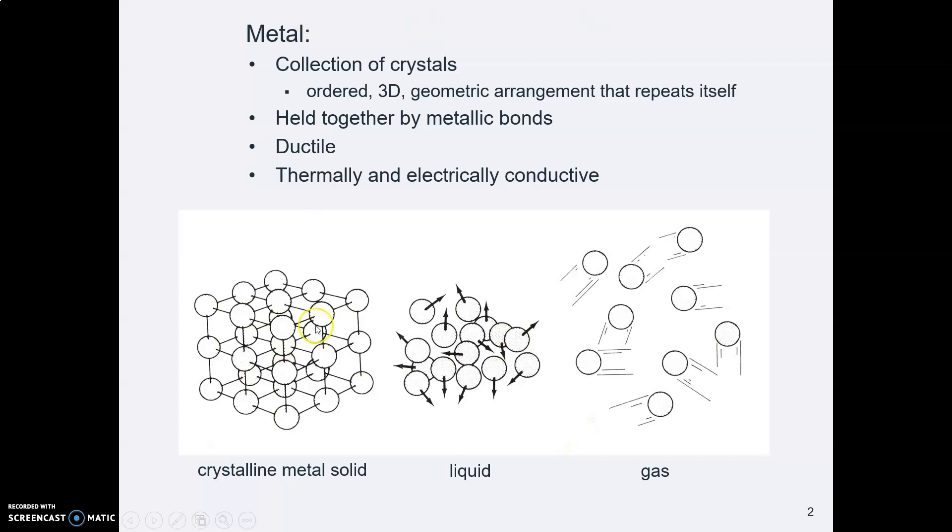And metallic means there's a cloud of electrons swirling around. Metals are made in a crystalline structure, so it's an orderly structure. It's ductile, which means it's not brittle. It will yield and deform before it breaks. It conducts heat and it conducts electricity.